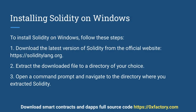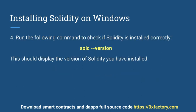Installing Solidity on Windows. To install Solidity on Windows, follow these steps. 1. Download the latest version of Solidity from the official website, www.soliditylang.org. 2. Extract the downloaded file to a directory of your choice. 3. Open a command prompt and navigate to the directory where you extracted Solidity. 4. Run the following command to check if Solidity is installed correctly.